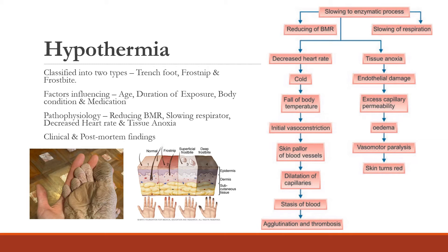Skin turns red and decreased heart rate leads to a fall of body temperature. Initial vasoconstriction causes the blood vessels to become very narrow and the skin becomes pallor — pale in color. Then dilation of capillaries occurs suddenly, followed by stasis of blood, sudden flow of blood from peripheral organs, agglutination, and thrombosis — obstruction of blood flow in the blood vessels.